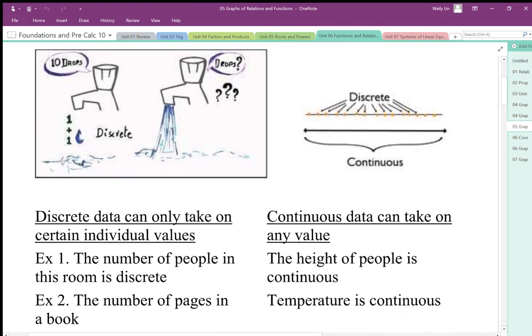A discrete variable can take on certain individual values. On a number line, it can be like negative 1, 0, 1, but it does not take on values in between.